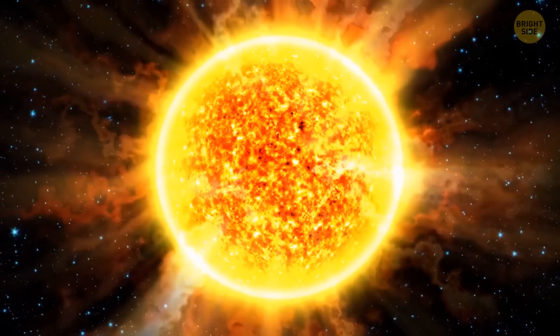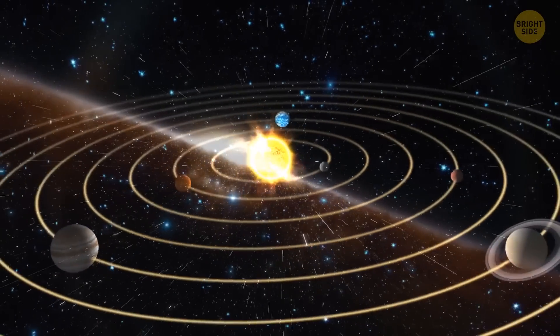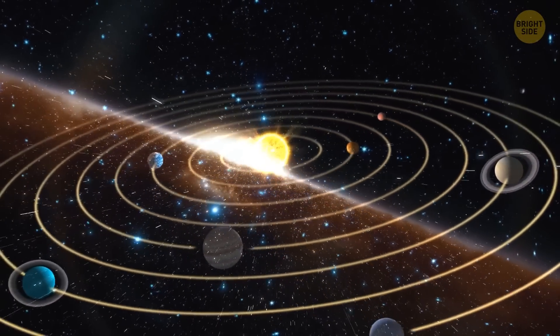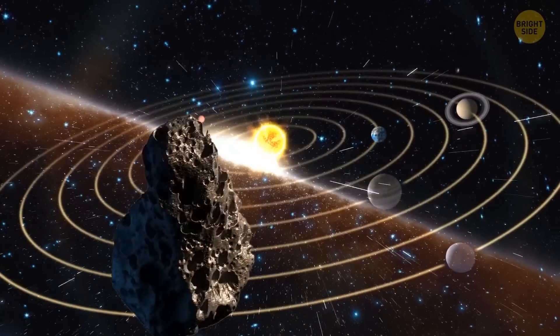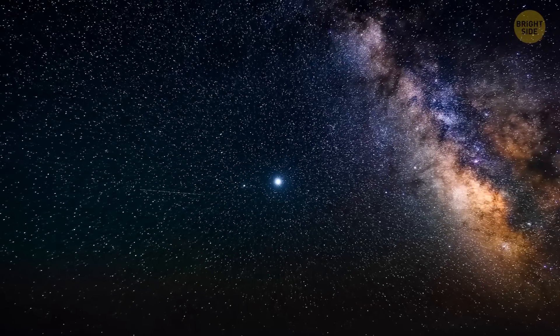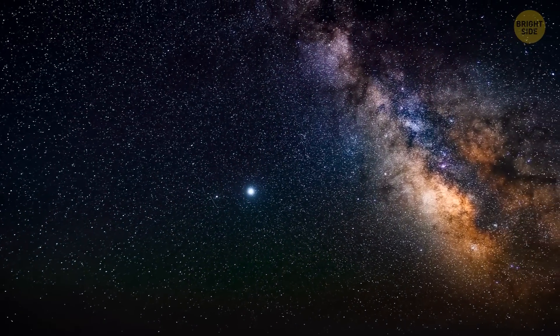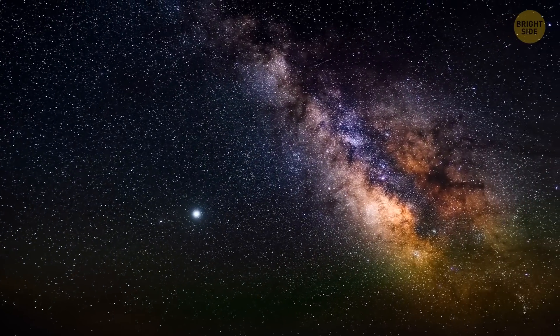The position of the solar system in the galaxy affects our life in many ways. For example, things like the amount of radiation and cosmic rays we're exposed to, and even the likelihood of asteroid impacts, and so on. Also, thanks to our location, we can enjoy some pretty amazing views of the universe around us.